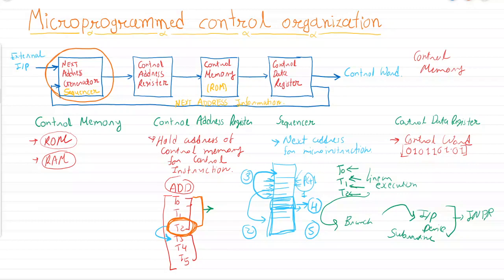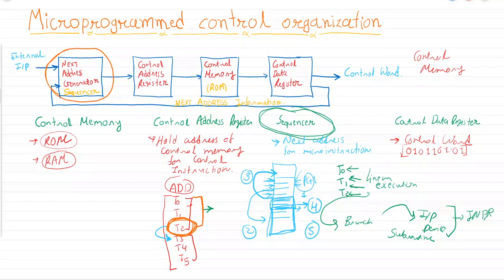This is the basic architecture of the micro program control unit. In the next topic we will focus on the sequencer and next address generation in the micro program control unit. The main advantage of the micro program control unit is that once the hardware configuration is established, there is no need to change hardware connections — new instructions can be implemented simply by changing the content of control memory. This was not possible with the hardware control unit because it used static logic circuits. In the next video we will discuss address sequencing.